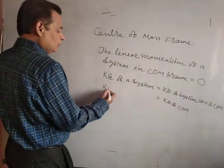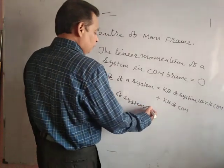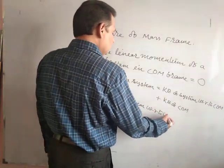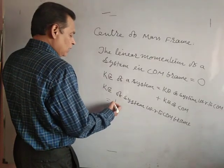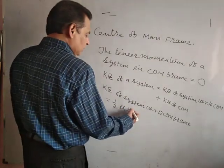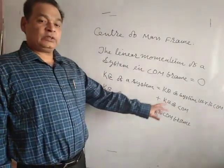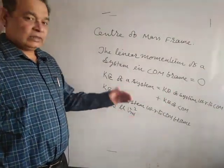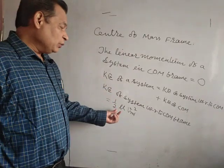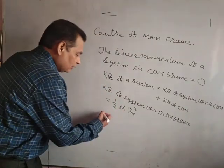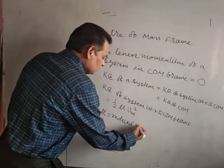Kinetic energy of the system with respect to the center of mass frame equals one-half mu times V-relative squared. We will prove this formula further, but first we assume it. Here mu is the reduced mass.